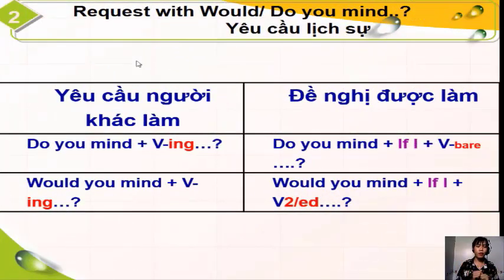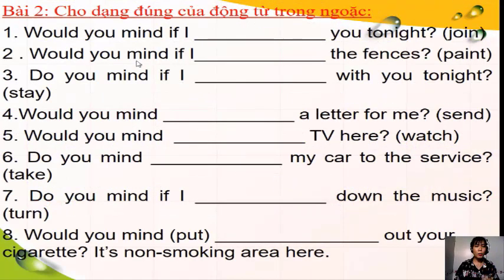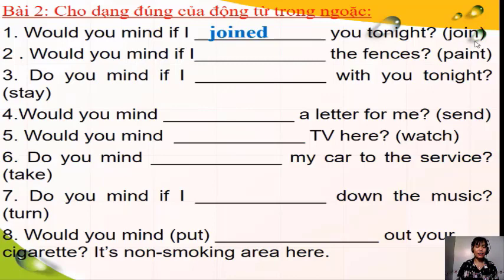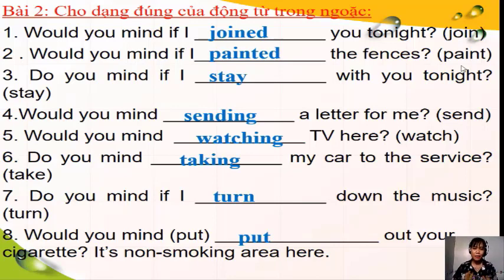Bây giờ chúng ta sẽ cùng nhau ứng dụng công thức vào những câu bài tập sau đây. Câu số 1: 'Would you mind' và phía sau có chữ 'if I', động từ 'join' là động từ có quy tắc, nên sẽ biến thành 'joined'. Câu số 2: 'Would you mind if I' và động từ 'can' có quy tắc, nên cô sẽ biến thành dạng quá khứ. Câu số 4: 'Would you mind' cộng cho động từ có quy tắc, cô sẽ dùng hình thức động từ 'send' thêm '-ed' là 'sent'. Tương tự những câu còn lại, cô sẽ show đáp án cho các em.